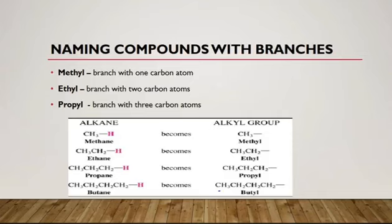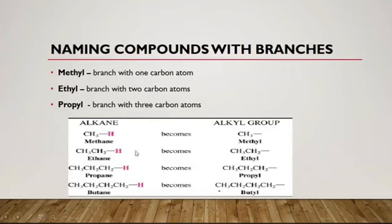When naming compounds with branches: a methyl branch has one carbon atom, an ethyl branch has two carbon atoms, and a propyl branch has three carbon atoms. To form a branch name, you remove one hydrogen from the parent molecule and change the suffix to '-yl'. So methane becomes methyl, ethane becomes ethyl, propane becomes propyl, and butane becomes butyl. These are all known as alkyl groups — the branch chains.